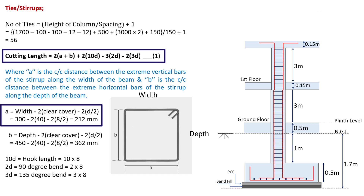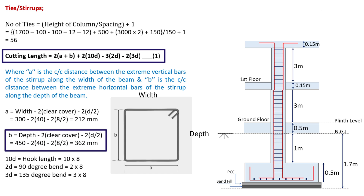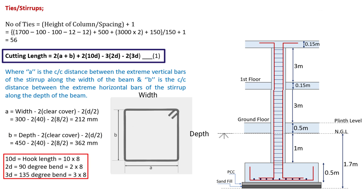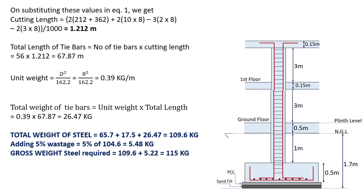The cutting length of ties is given by: 2(a + b) + 2 × 10d − 3 × 2d − 2 × 3d, where 'a' is the center-to-center distance between extreme vertical bars along the width, and 'b' is the center-to-center distance along the depth. Here, a = width (300 mm) − 2 × clear cover (40 mm) − 2 × (d/2) where d = 8 mm, giving a = 212 mm. b = depth (450 mm) − 2 × clear cover − 2 × (d/2) = 362 mm. 10d is the hook length, 2d is for 90° bend, and 3d is for 135° bend. The cutting length of ties equals 1.212 m.